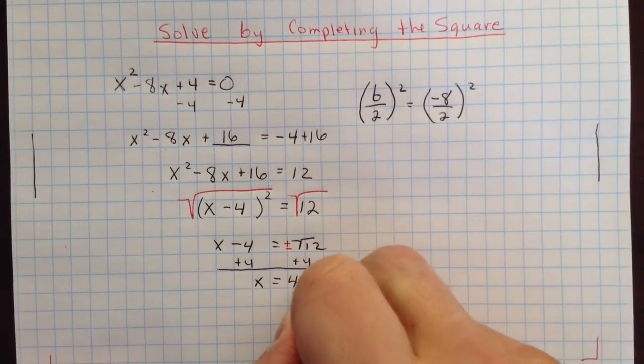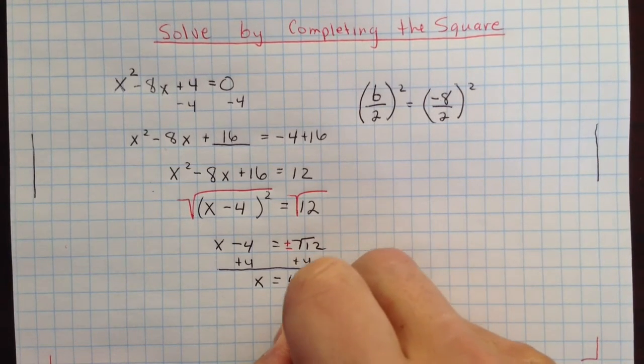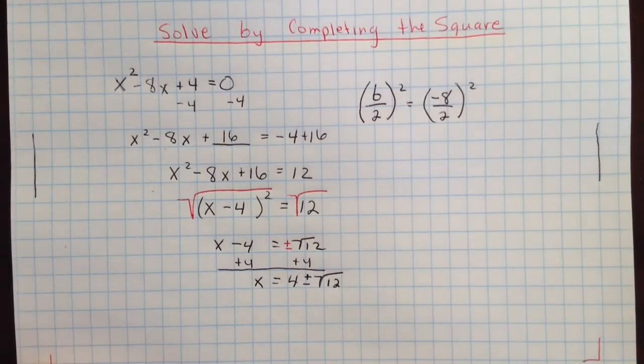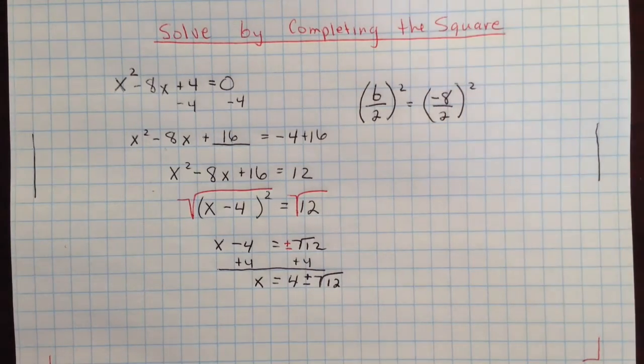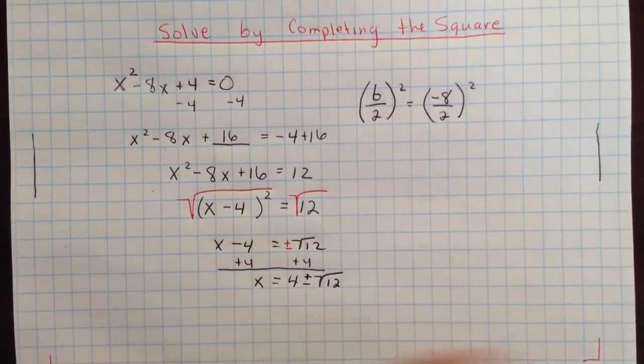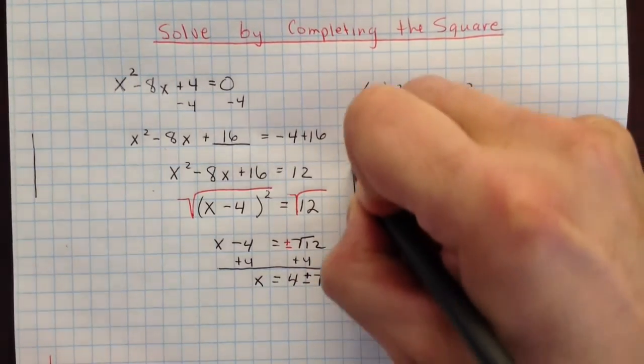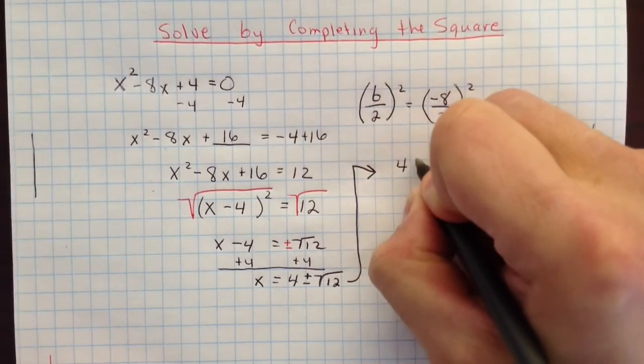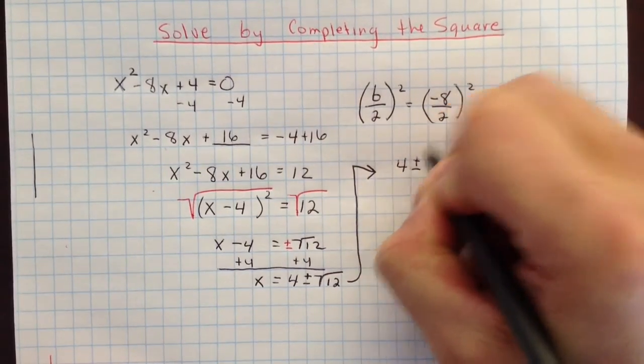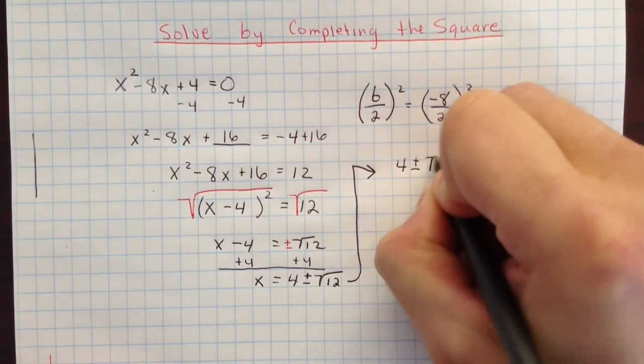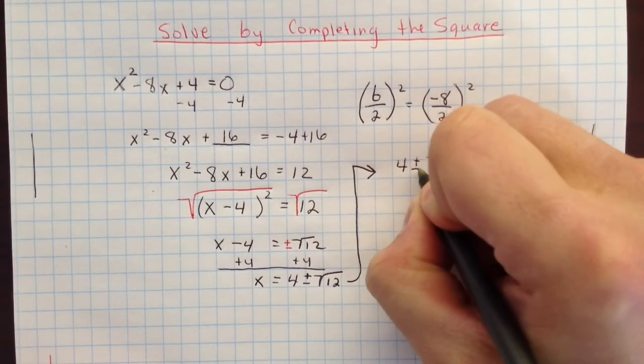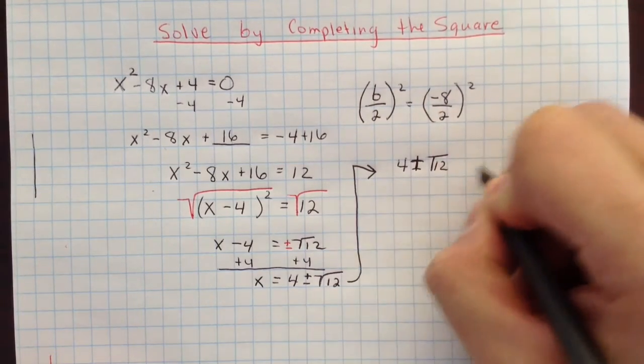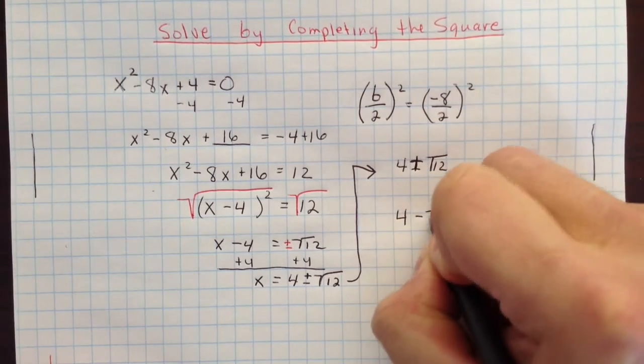So we're going to take 4 plus the square root of 12 and 4 minus the square root of 12. Those are our two solutions. Remember quadratic equations have two solutions. I'll put it up here now so you can see a little bit better. So we get 4 plus the square root of 12 and 4 minus the square root of 12.